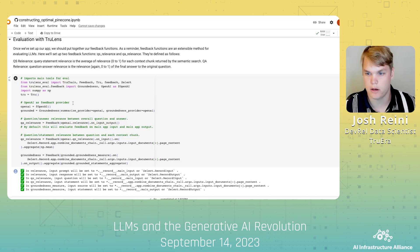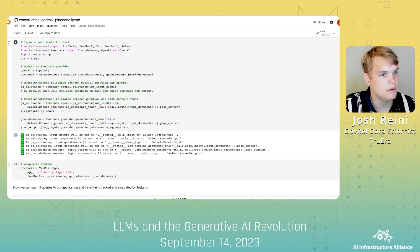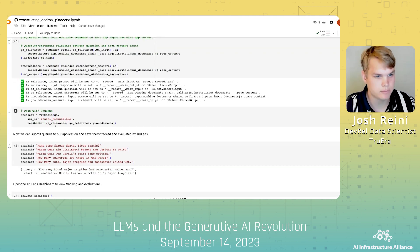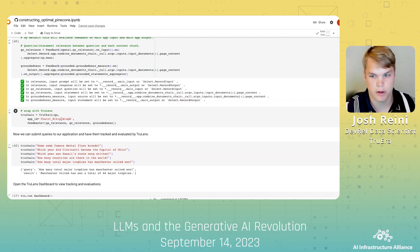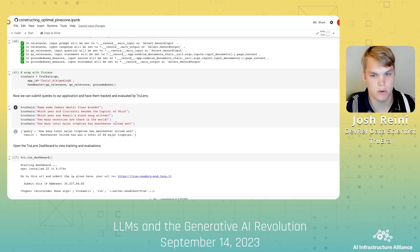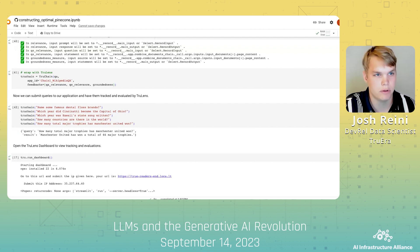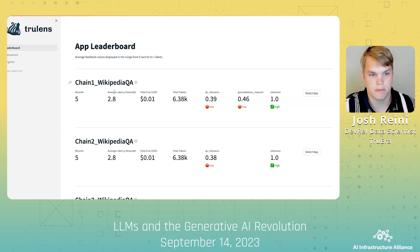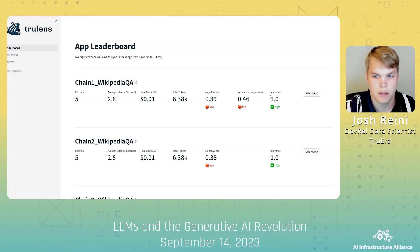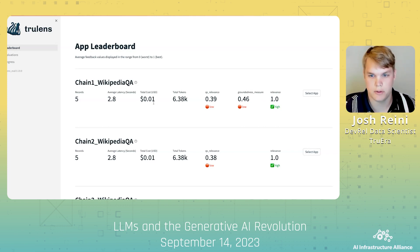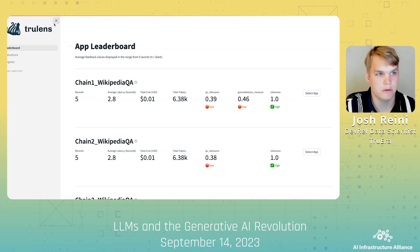Once we've set these up, we can just pass them as a list into our application with TrueChain — TrueChain being the LangChain deep integration that TrueLens has. Once we've done so, we can operate the app as normal, passing in prompts and getting responses. And importantly, these will now show up in the dashboard. If we go over to the TrueLens dashboard, we can see the first five runs of our application, along with evaluation scores for context relevance, groundedness, and question-and-answer relevance, as well as latency and cost. You can see we're really struggling in both context relevance and groundedness for this application, and we should continue to iterate to improve the app.